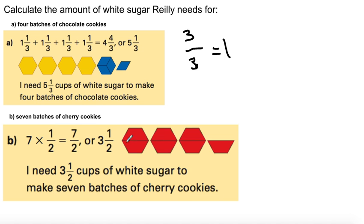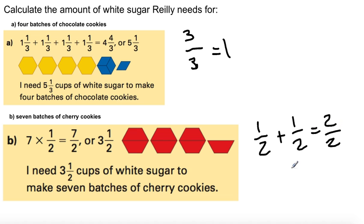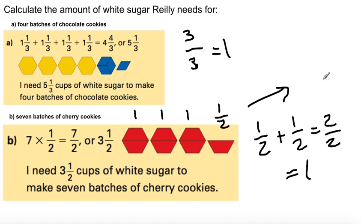Next: 7 batches of cherry cookies, each requiring a half cup. What makes a whole here? 2 over 2 — two halves make 1 whole. So: half and half makes 1, half and half makes another 1, half and half makes another 1, and then just a half left over. So what do you get? 3 and a half. These are easy because they all have common denominators. Pause now, copy this down, and follow along in your textbooks.